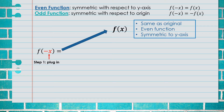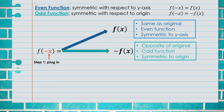What if you plug in negative x and the result is the opposite of the original function? Remember, the negative sign can also be interpreted as 'the opposite of.' If the result is the opposite of the original, that indicates it is an odd function, which means it is symmetric to the origin. A helpful hint: opposite, odd, and origin all start with the letter O.